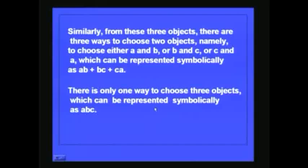Similarly, from these three objects there are three ways to choose two objects — namely you can choose either A and B, or B and C, or C and A. And this can be represented symbolically as AB + BC + CA. And if you want to choose all three objects then there is only one way of doing it, represented symbolically as ABC.